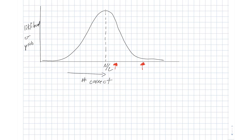The formal way to talk about this is we ask what is the probability, under the null hypothesis, of getting to this point or higher. That involves integrating the tail region, and this is what we refer to as the P value. To state that precisely, the P value is the probability under the null hypothesis that we will see this particular value or higher. There's a two-tailed definition as well, but we won't worry about that here.